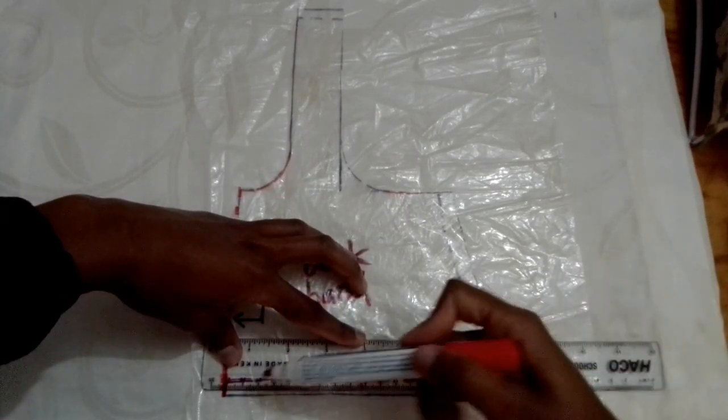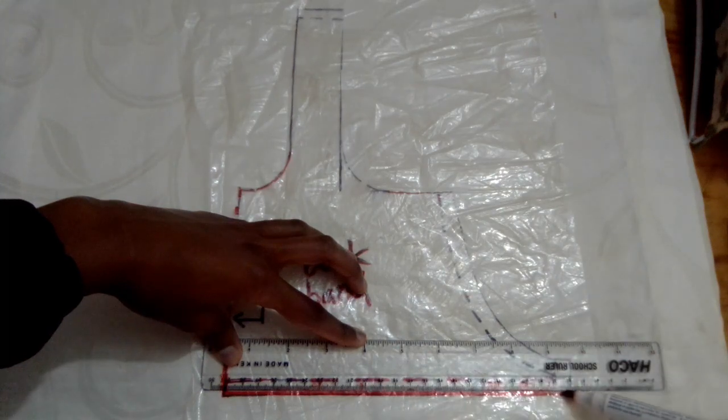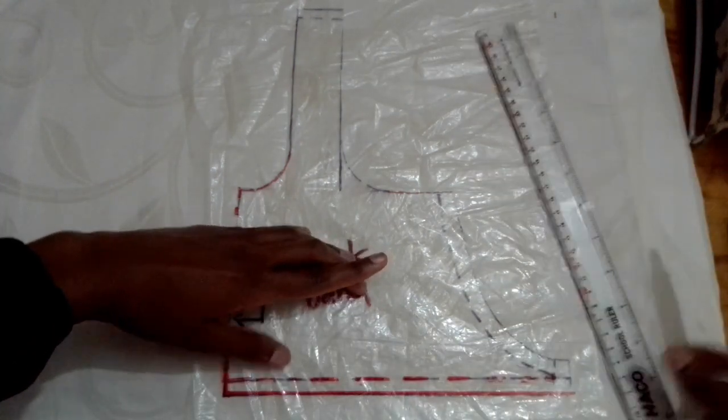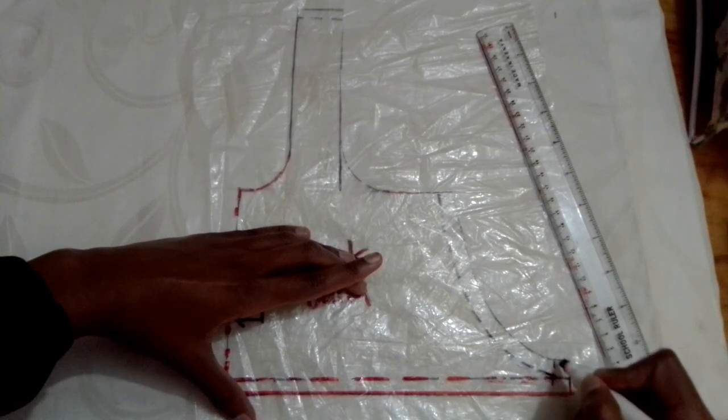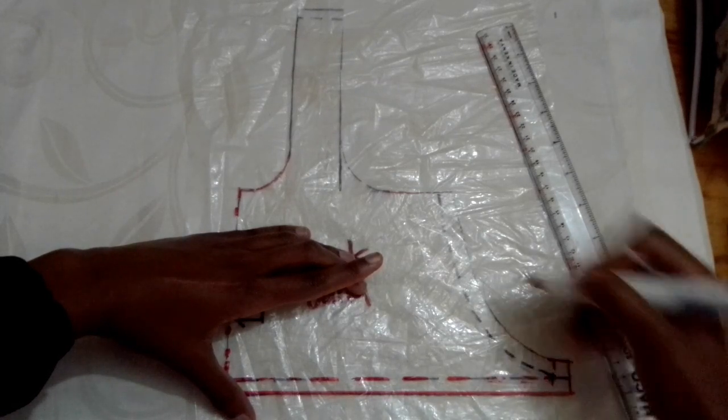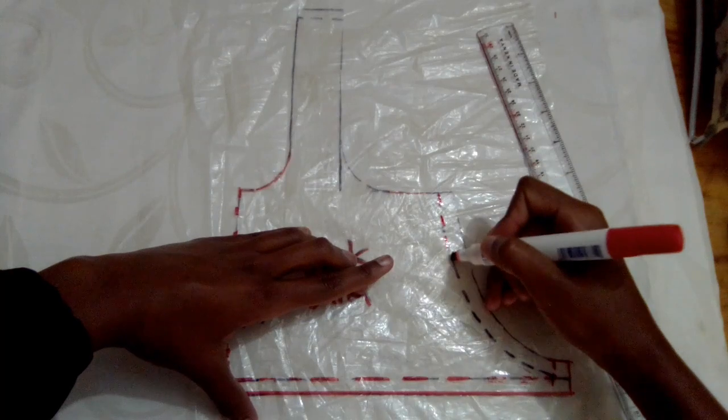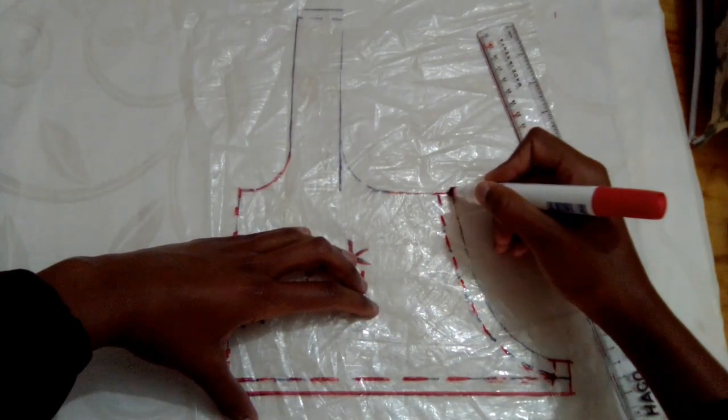Then you're going to draw your cutting line. My seam allowance is one centimeter. Then you're going to trace the edge and mark your notch for the front.